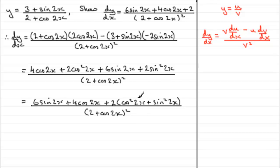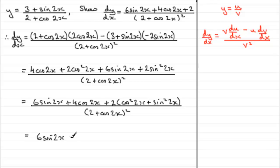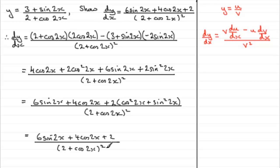We use the identity cos² θ plus sin² θ equals 1. So cos² 2x plus sin² 2x equals 1, making the term 2 times 1, which is simply 2. Therefore dy/dx equals (6 sine 2x plus 4 cos 2x plus 2) over (2 plus cos 2x) squared — which is what we had to show.